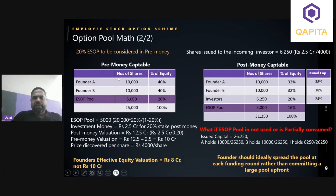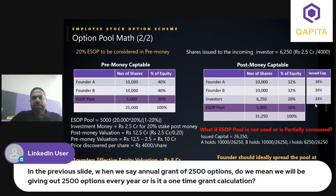To avoid this ratio problem, it is advisable in term sheets that any unused balance in the ESOP pool should revert back to the founders. This is an important learning when introducing ESOPs, and it is very evident from the cap table illustration.